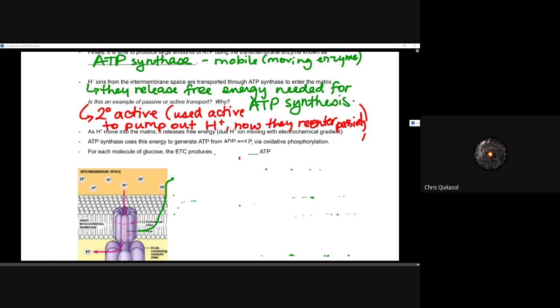Again, this is an example of that secondary active transport. We use energy to pump that hydrogen ion out using that electron transport chain, and now they're going to reenter passively. As they move into the matrix, it's going to release that free energy due to that hydrogen ion moving with an electrochemical gradient. ATP synthase will then use that to generate ATP from ADP and Pi, that phosphate group, via oxidative phosphorylation.